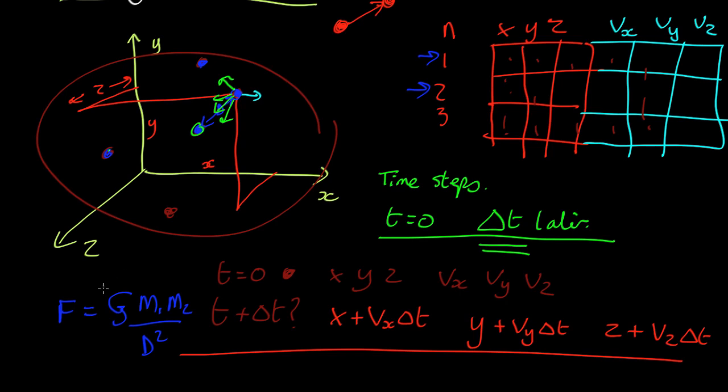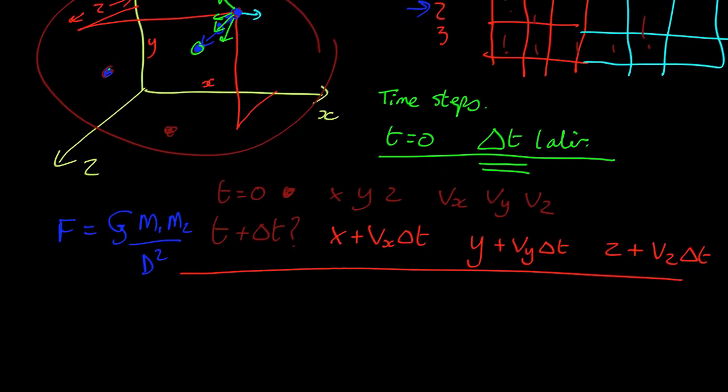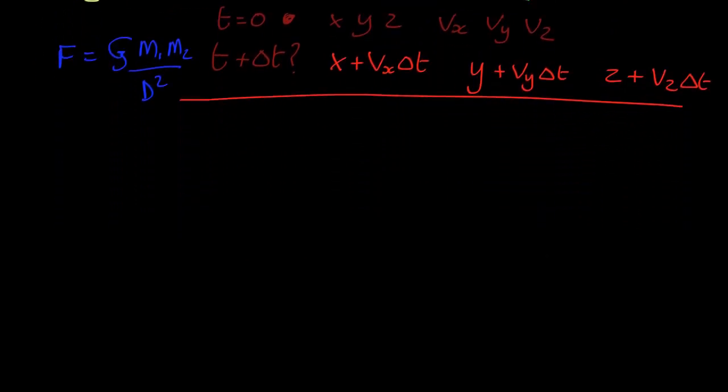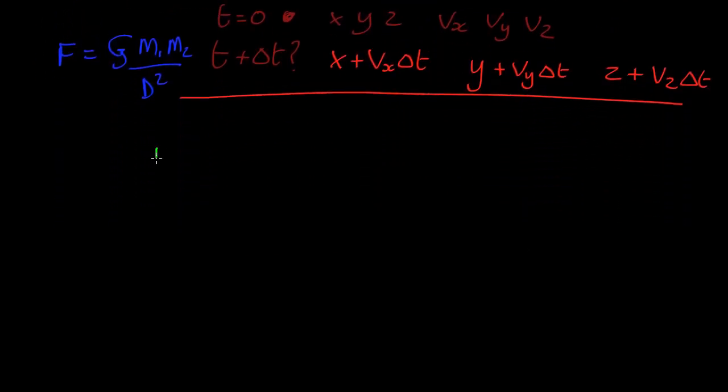So we get all the forces, the forces of each particle and every other particle. There's a lot of arithmetic to add them all up, but that's what computers are good at. And so we can work out the total force, which is just the sum of the individual forces from every other particle.